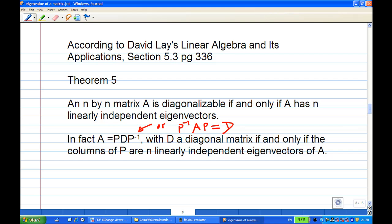According to David Lay's Linear Algebra and Its Applications, section 5.3, page 336, theorem 5: An n by n matrix A is diagonalizable if and only if A has n linearly independent eigenvectors. But we already know that since the eigenvalues of A are distinct, so the eigenvectors are linearly independent.